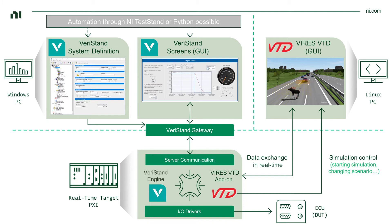Typically what we would also have is, through VeriStand, we would interface with our dedicated IO and therefore talk to the actual ECU that would be running the control algorithm. So basically over VeriStand and the real-time PXI system, we would then transfer the simulated IO data to the ECU, which is running the ADAS algorithm in order to test the algorithm on the ECU.